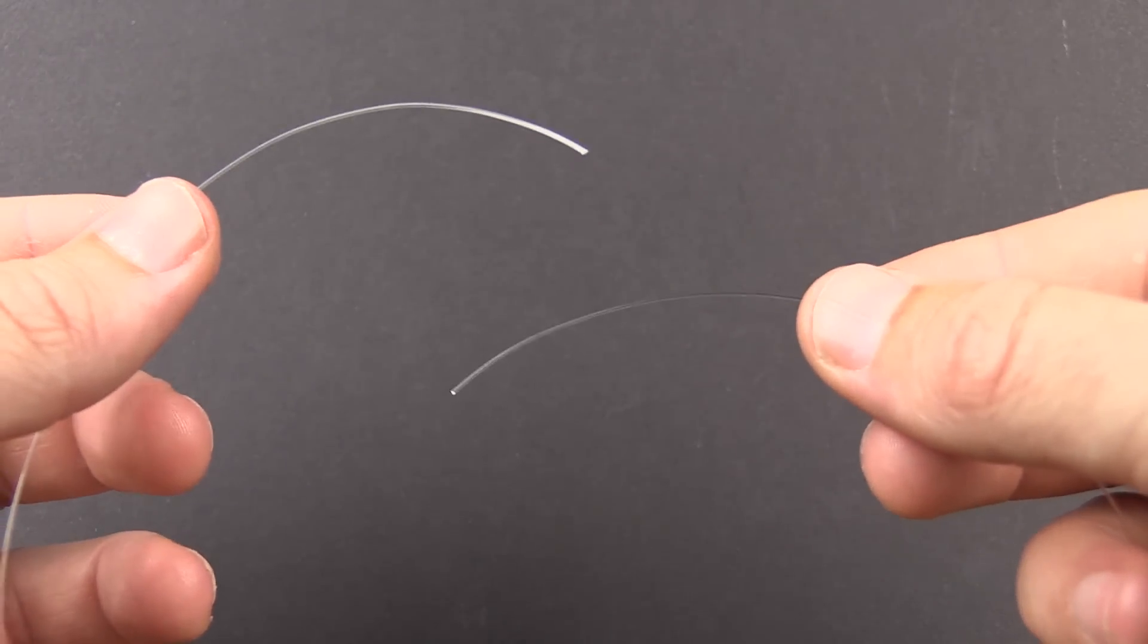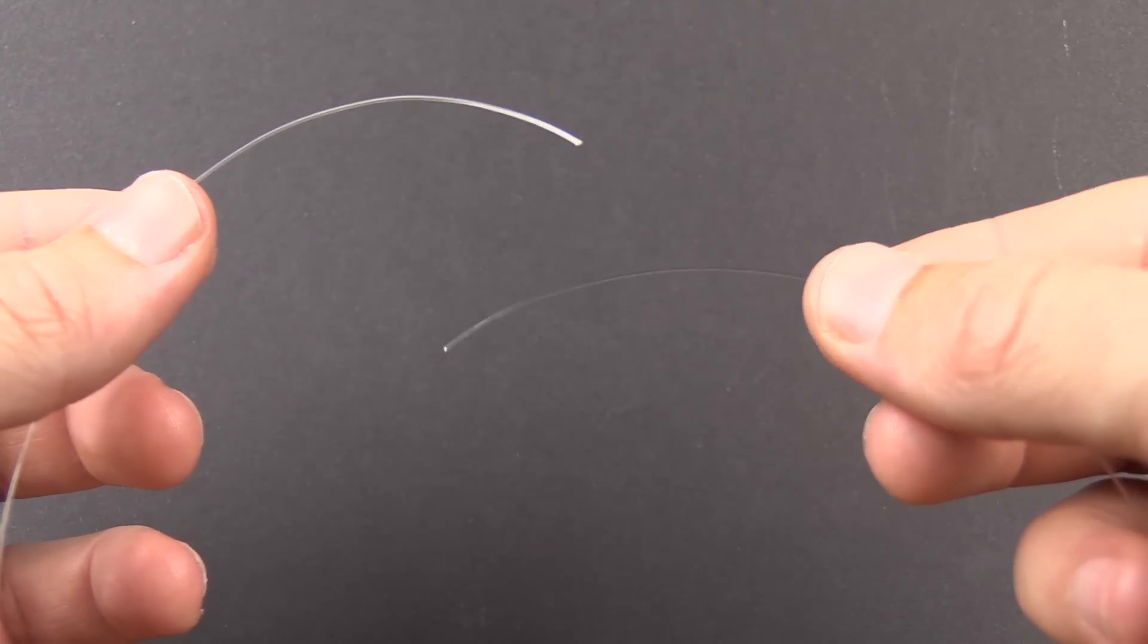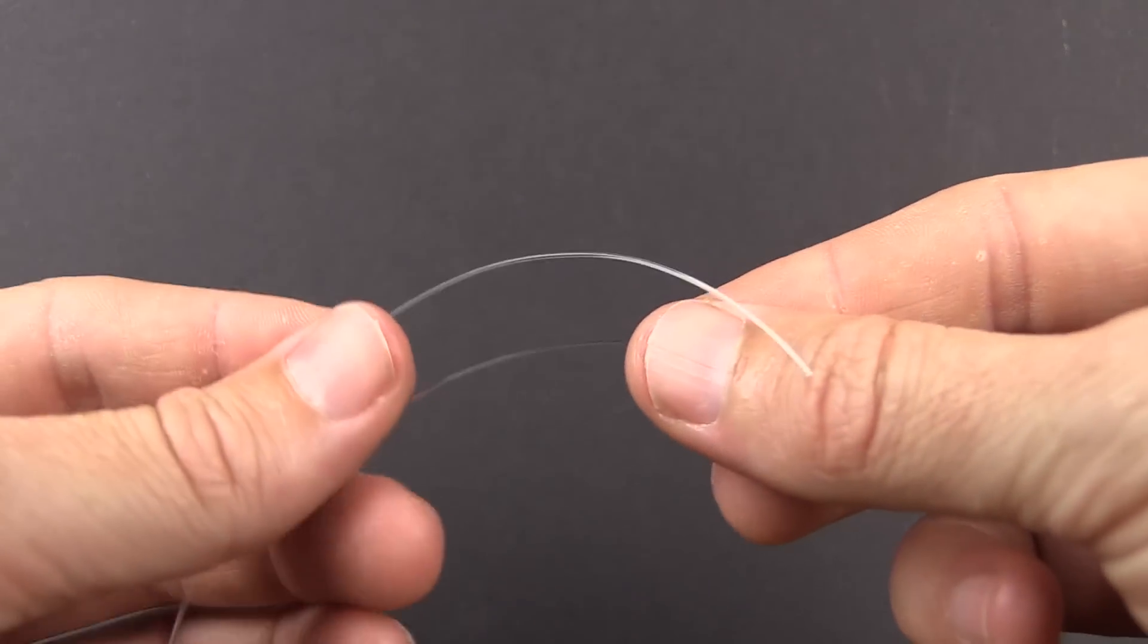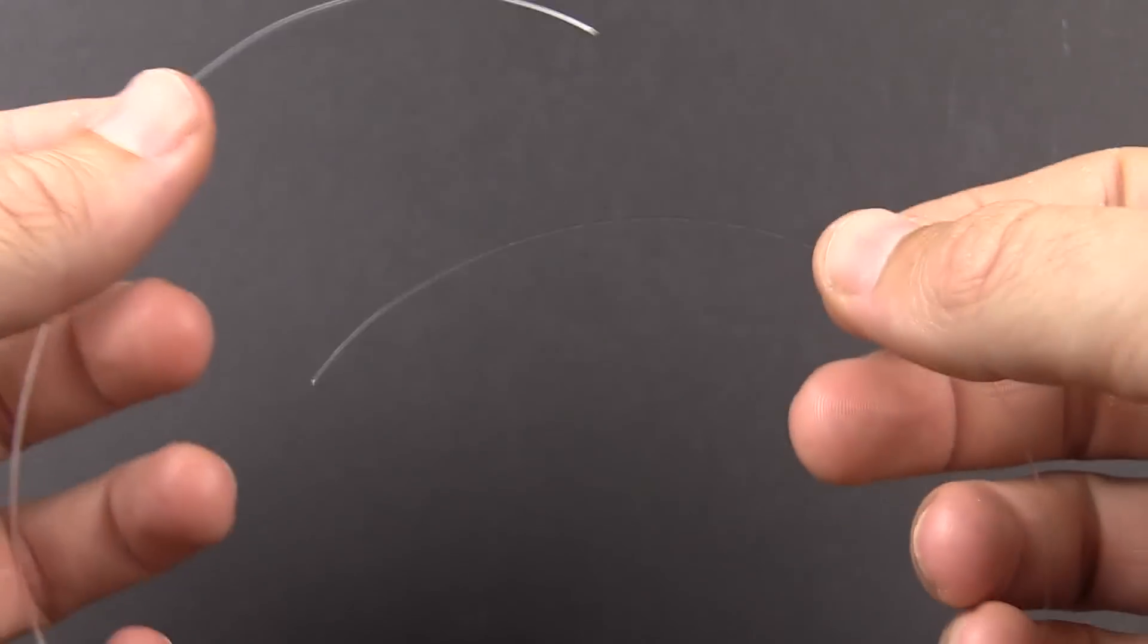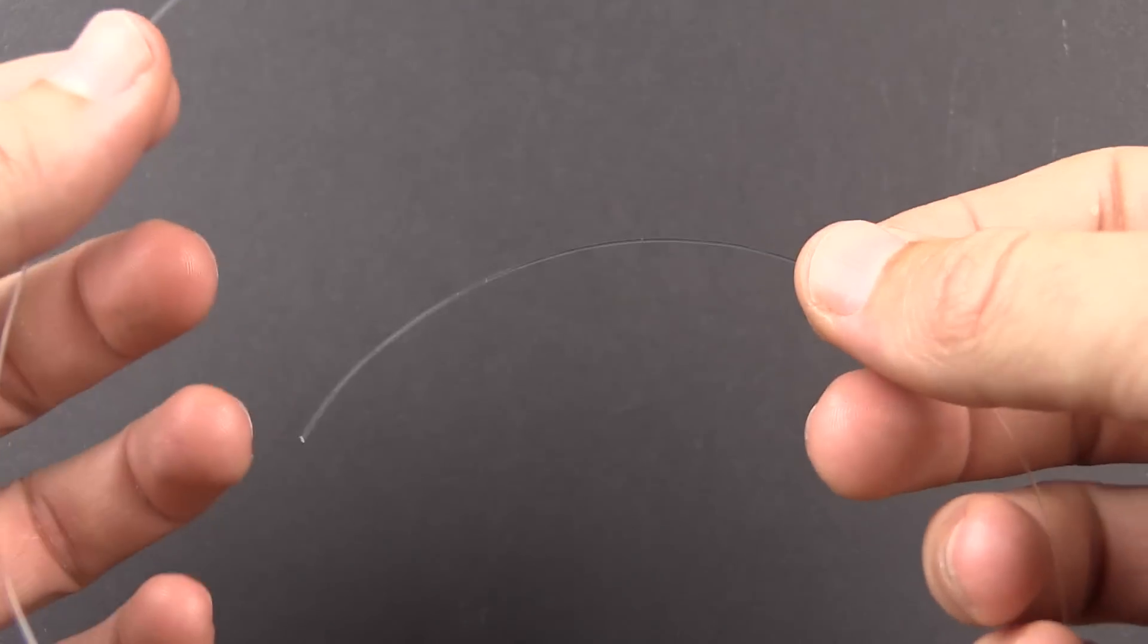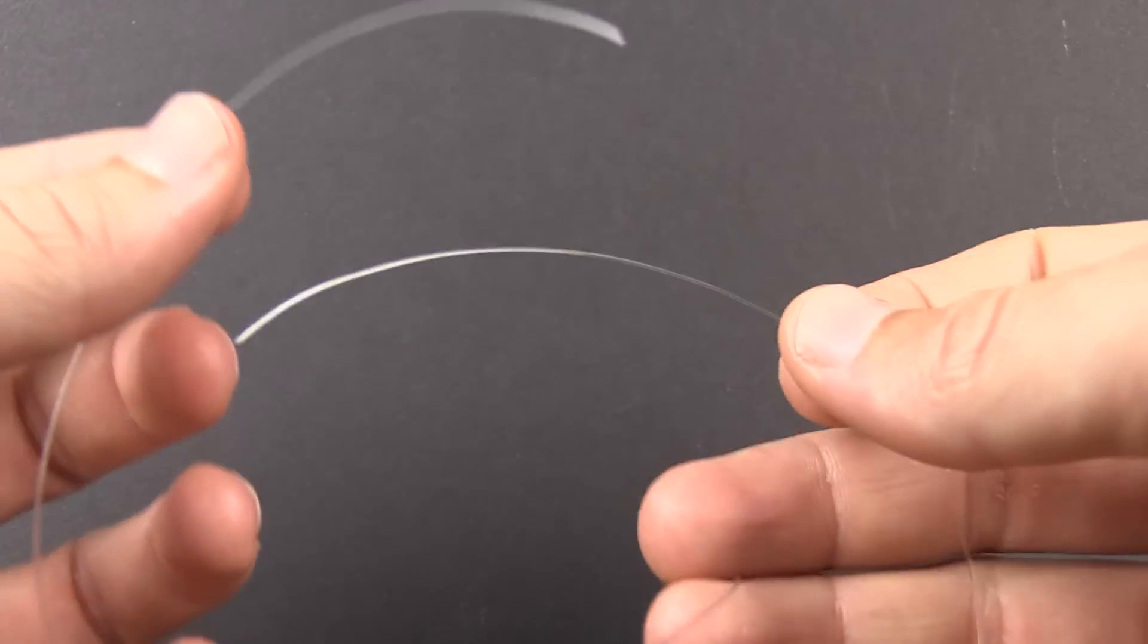It is actually one of the strongest line-to-line knots that I've tested, and I've tested a ton of them. The cool thing is that it is very easy to tie. The only downside is that you have to tie this before you tie your terminal tackle to the end of your leader.